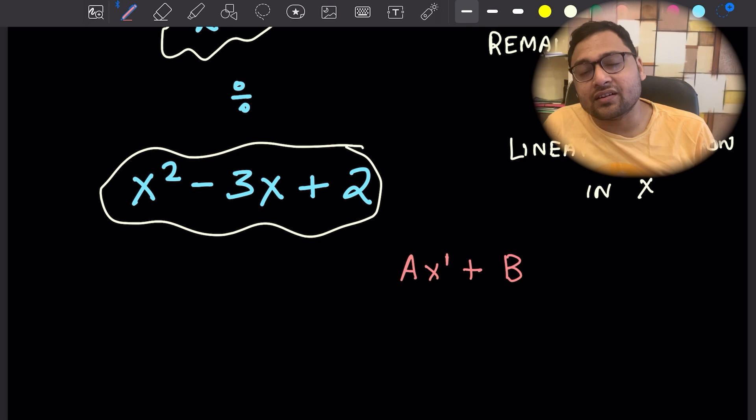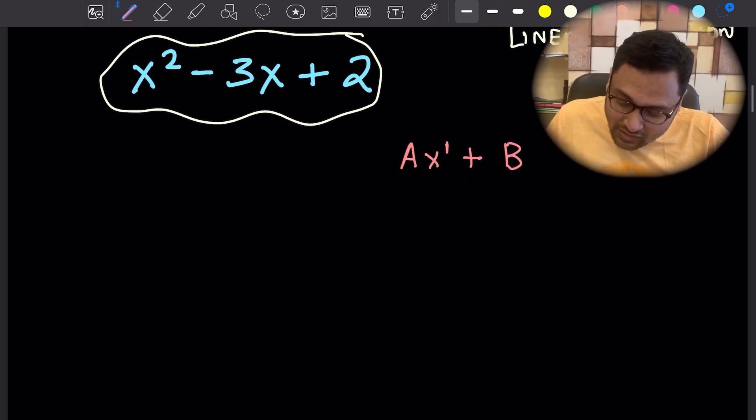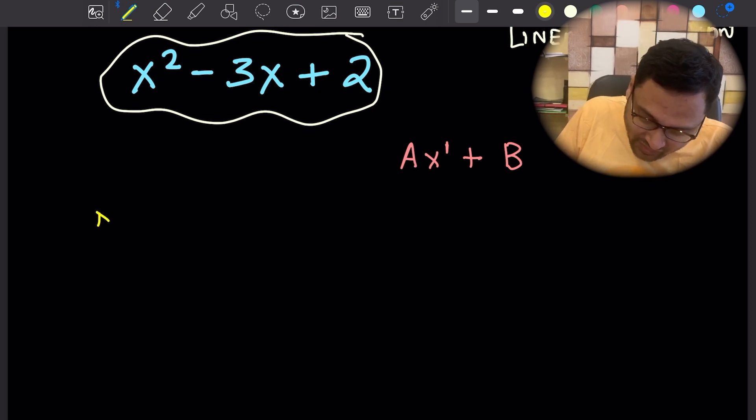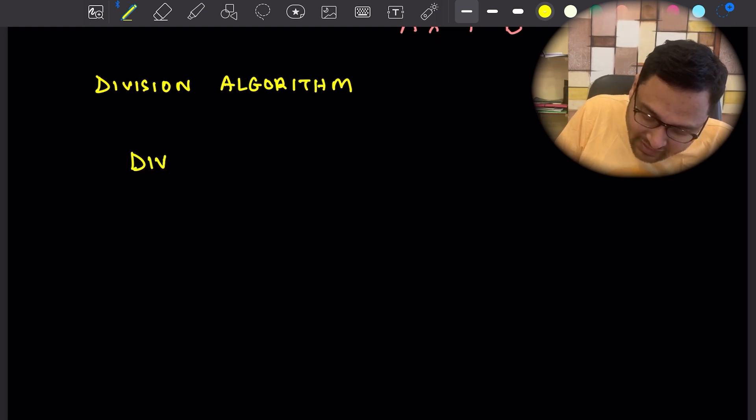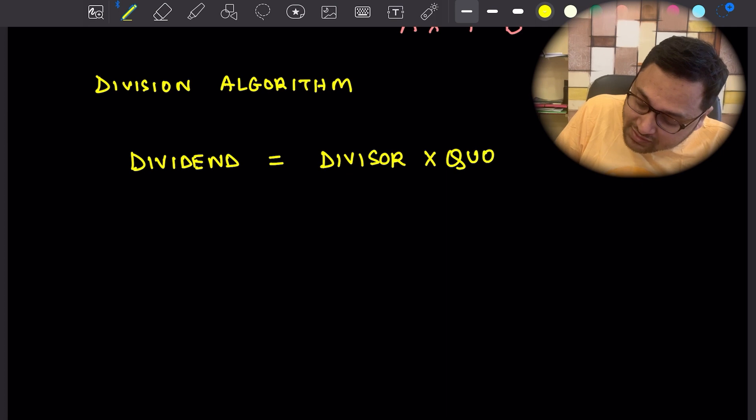Let's write it using the division algorithm. What is the division algorithm? It's simply: dividend equals divisor times quotient plus remainder.